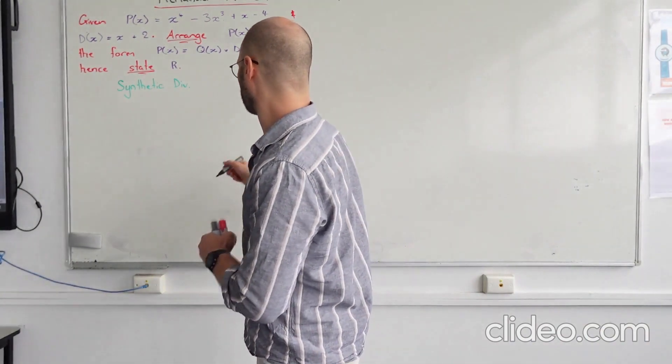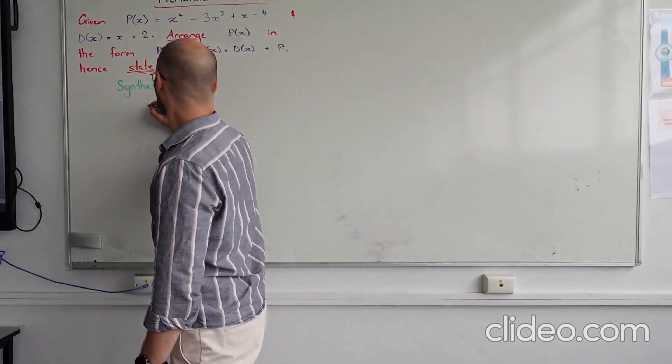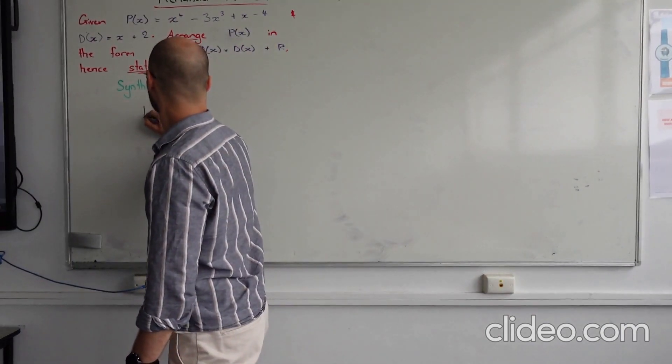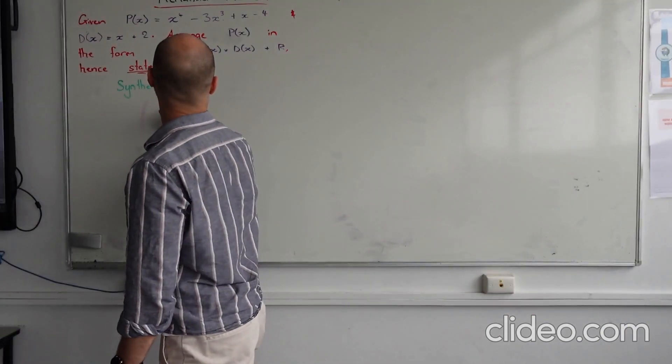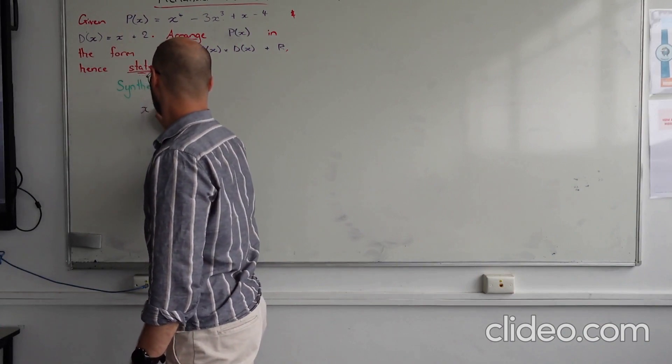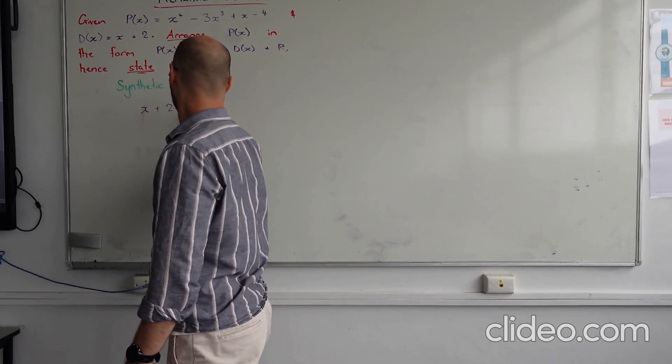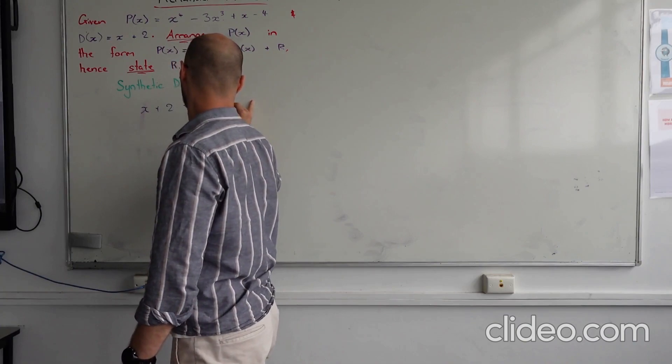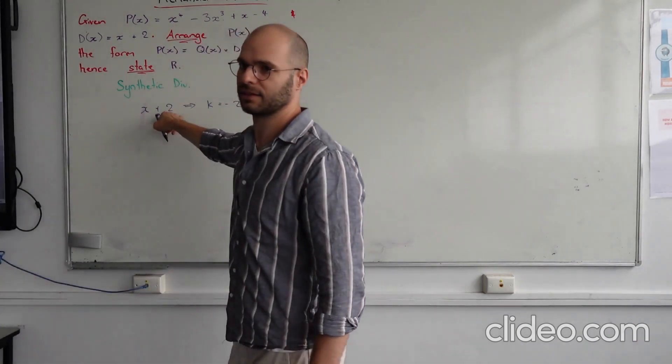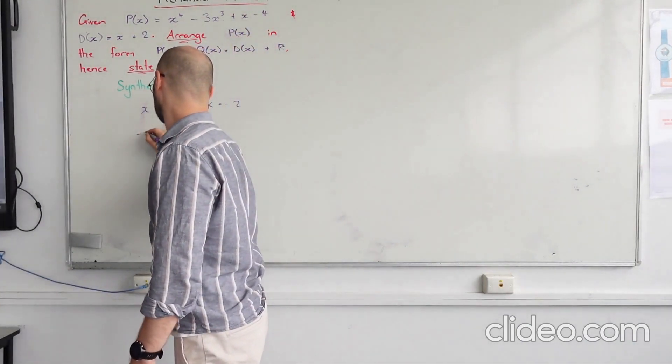Okay. So that's going to look like... k. Oops. It's going to be divisor is x plus 2. Which gives us a k of whatever the offset of that is. Hence...